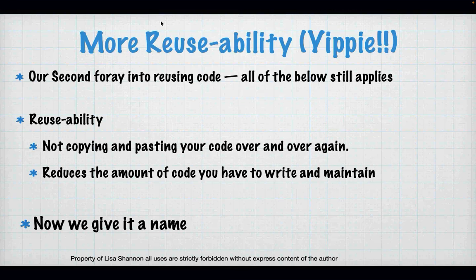The same principles apply as last week — we're not copying and pasting. We're actually reducing the amount of code we write because we're reusing our code. But this week, we give it a name. Like we name variables, we're going to name functions. A variable holds a value; a function is going to hold a set of Python code. We can call it by name, give it data, and it can give us back data.